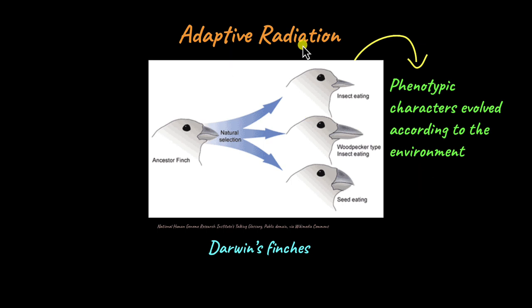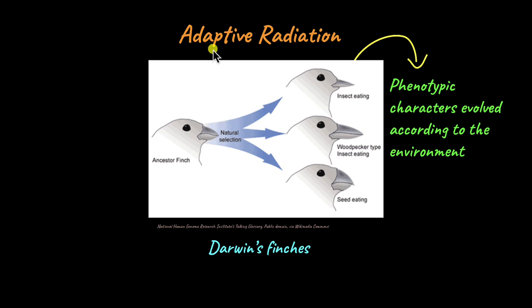That is what adaptive radiation is — the species literally radiated out from a single ancestral stock, and each became a unique species due to geographic isolation and sexual isolation. The insect-eating finches and the woodpecker-type insect-eating finches were geographically isolated for a long time, which gave them enough time to evolve into their own species, without much interaction to allow for gene exchange. These species radiated out from a common species — that is adaptive radiation. They all adapted to their own environments and radiated to form different species.